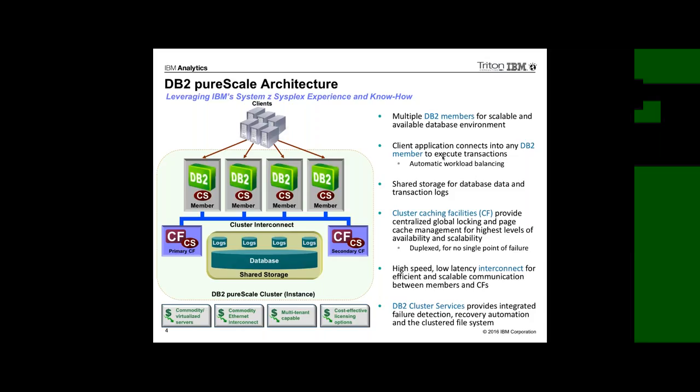Having the coupling facility on the same machine as DB2 is not a problem since that core is dedicated to just handling locking traffic and they're not interfering with one another. If you put it on a separate machine, there will be some more latency due to the interconnect. Let's look at what PureScale runs on. There's a new OS supported in this release: Power Linux Little Endian. Red Hat is supported currently on Power Linux LE, with SUSE expected in a future release or fixed pack.